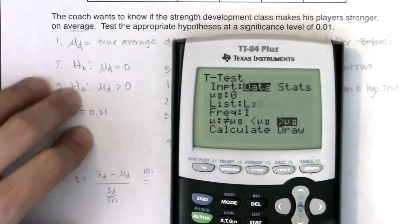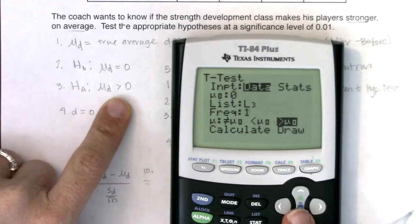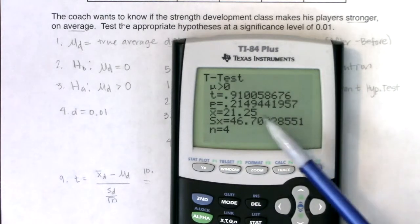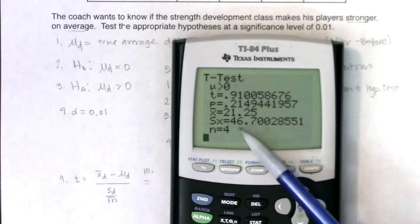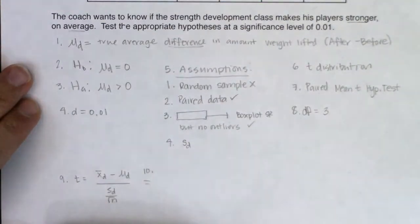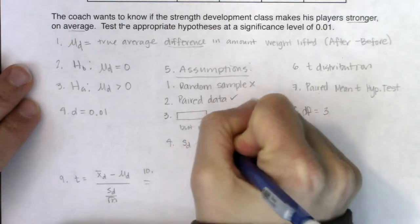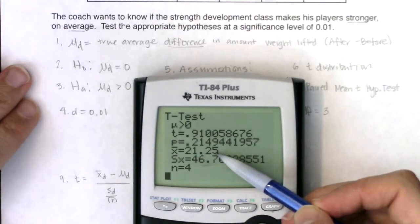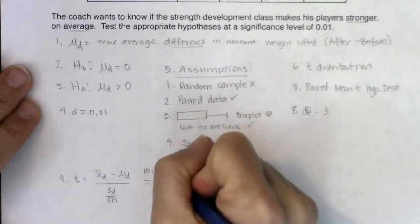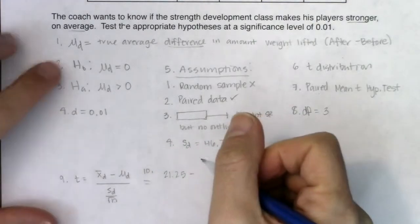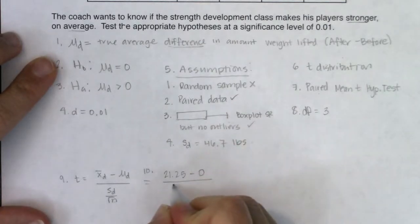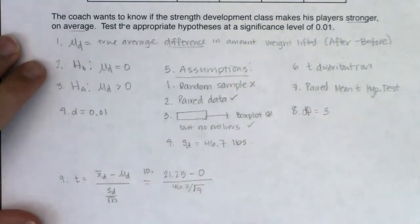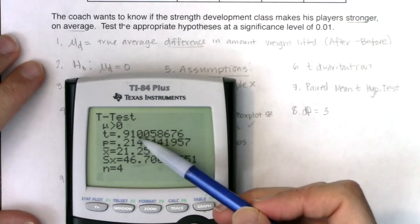From the output: the standard deviation is 46.7 pounds and x-bar is 21.25. So the test statistic is 21.25 minus 0 over 46.7 divided by square root of 4. The test statistic is t = 0.91.